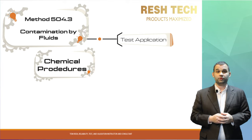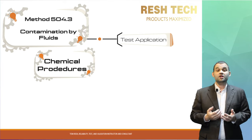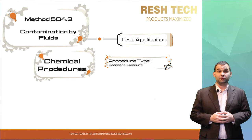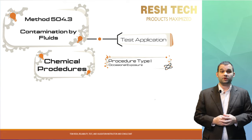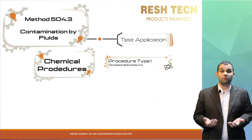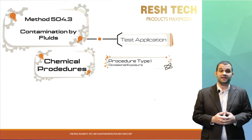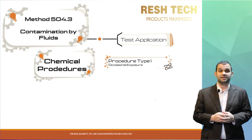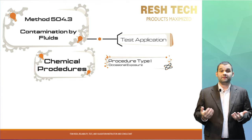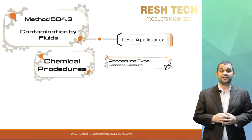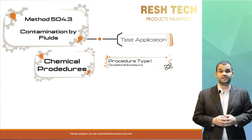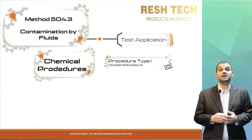The procedure for Method 504.3 is broken up into three types of exposures. The first is occasional exposure — for a system that isn't expected to get exposed often, if at all, to any chemicals during its operational field life, but needs to be tested for some level of margin or resistance to chemicals for that one-off instance when someone accidentally spills a cup of coffee, gasoline, or solvent, or occasionally when chemical exposure is an expected result of routine maintenance or cleaning.